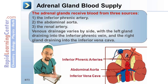The adrenal glands receive blood from three sources: one, the inferior phrenic artery; two, the abdominal aorta; and three, the renal artery. Venous drainage varies by side, with the left gland draining into the inferior phrenic vein and the right gland draining into the inferior vena cava.